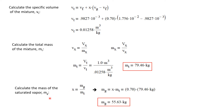Now let's calculate the mass of the saturated vapor. Going back to the definition of quality — quality is the mass of the saturated vapor divided by the total mass in the system — rearranging, the mass of the saturated vapor is the quality times the total mass, which is 70% of 79.46 kilograms. So the mass of the saturated vapor in the system is 55.63 kilograms.